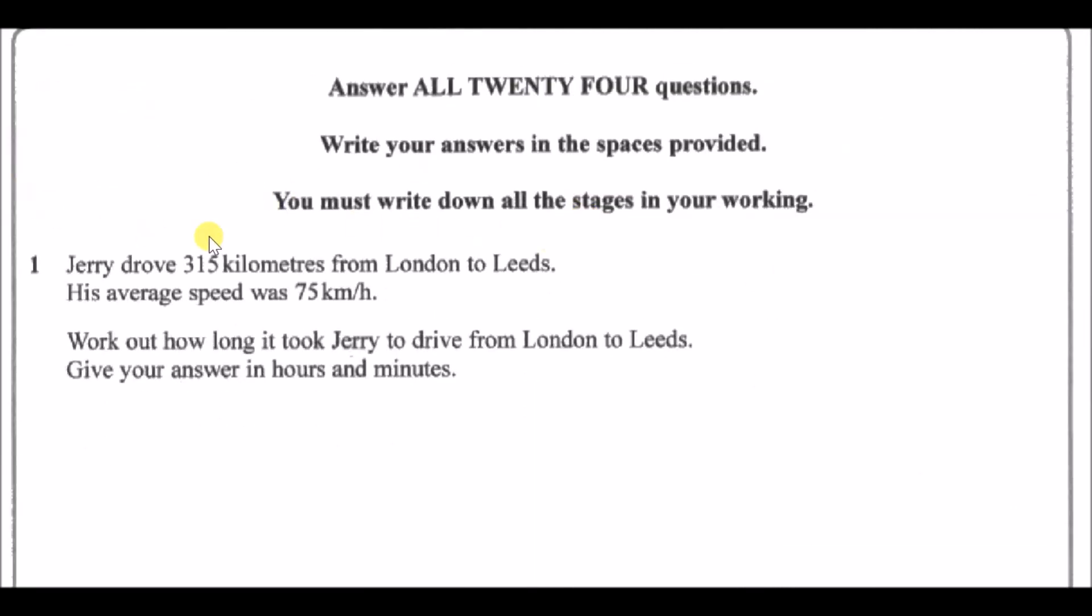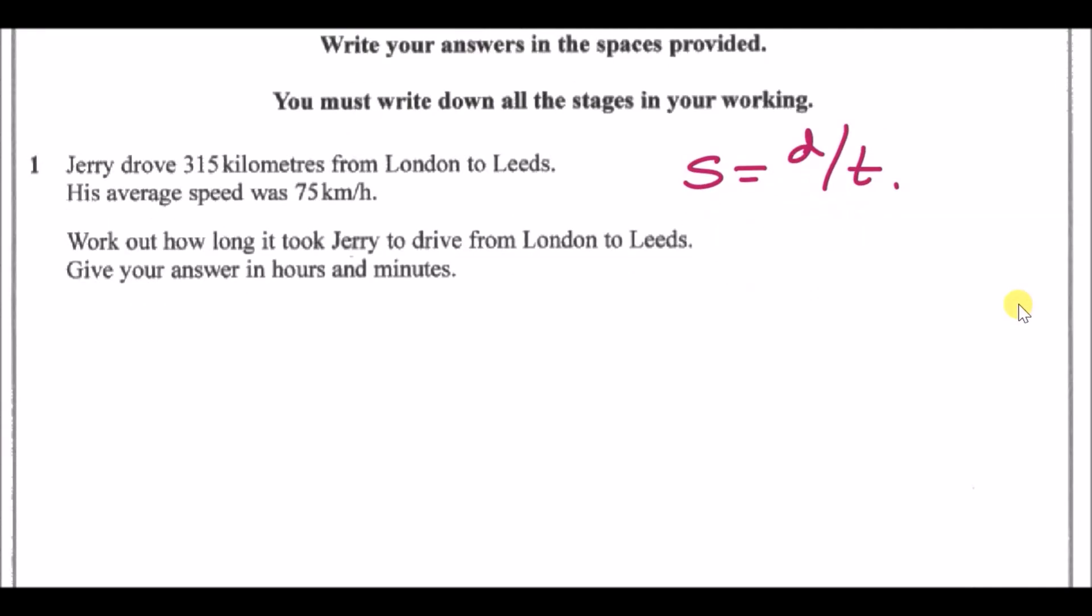Number one: Jerry drove 315 kilometers from London to Leeds. His average speed was 75 kilometers per hour, so we're working in kilometers and the time unit is hours. Always write the formula first. The formula for speed, distance, time is speed equals distance divided by time. Work out how long it took Jerry to drive from London to Leeds, so how long refers to the time. We need to rearrange this to make time the subject, so we swap t and s around. Now t equals distance divided by speed.